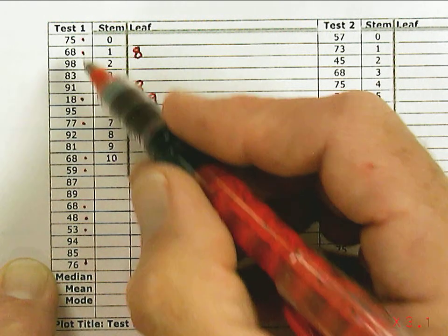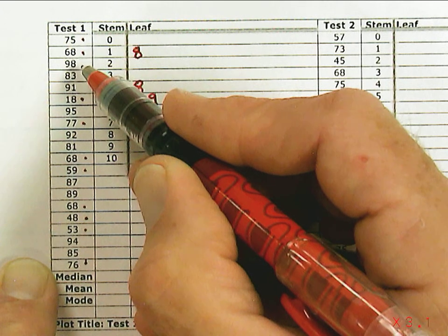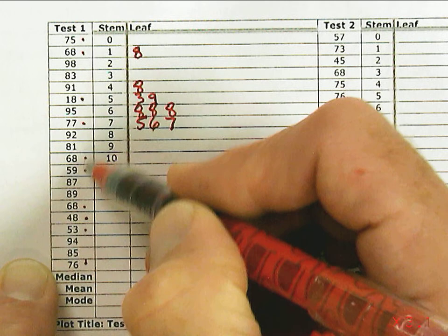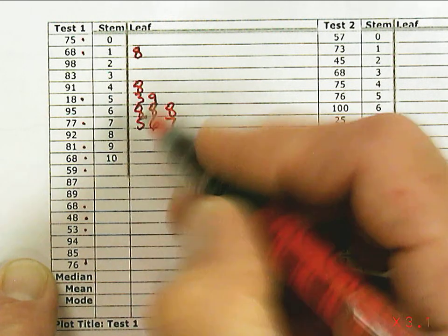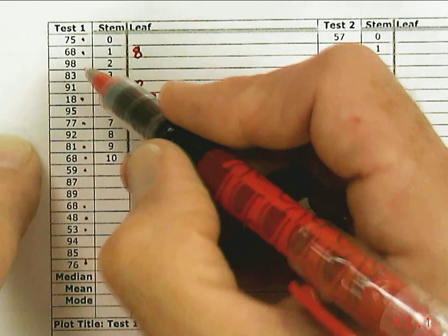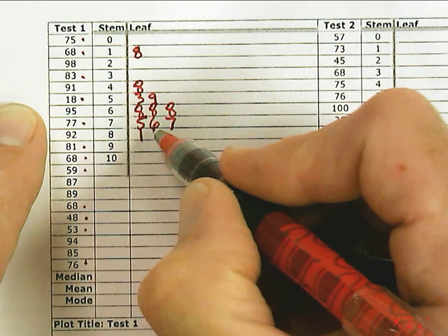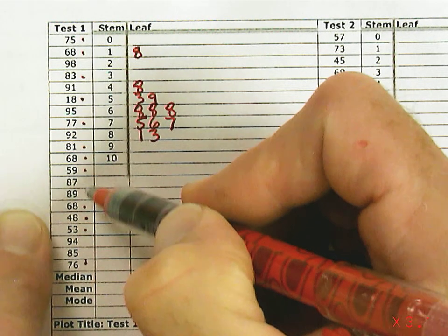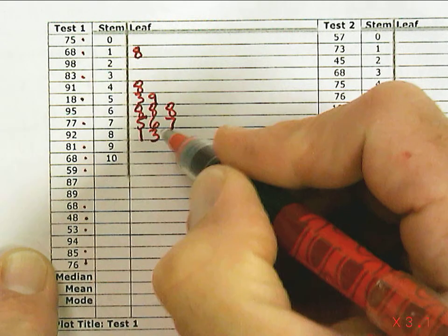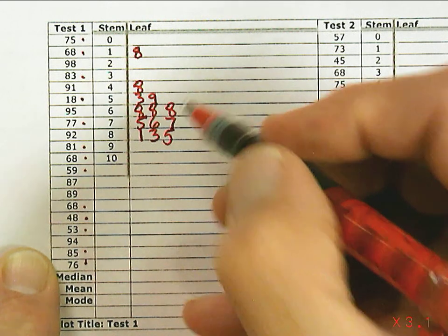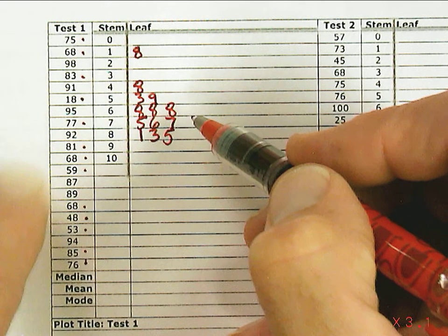Then 75 is next, and then there's a 76 and 77. That takes care of all the 70s. Now into the 80s. There's an 81, then 83, then 85. I'm just trying to get this list in order.